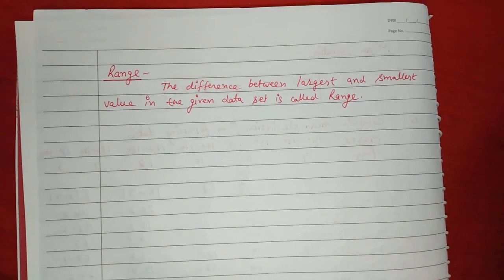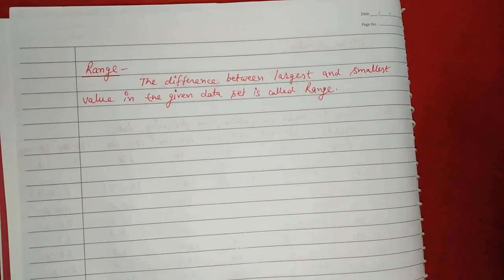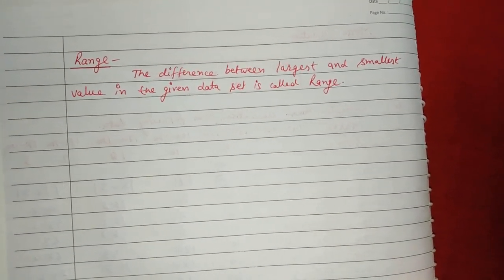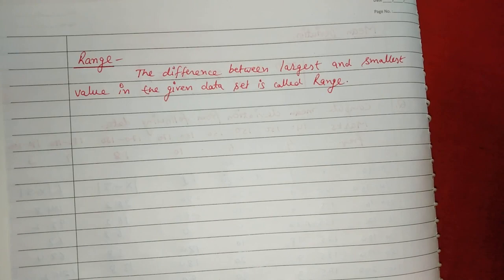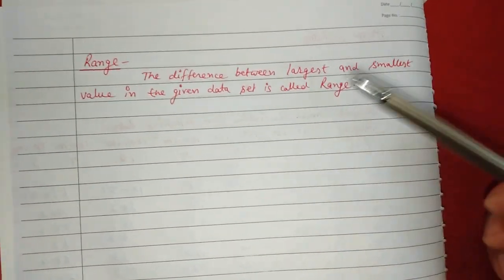Hi friends, you are welcome to the channel. Today we are going to discuss the range, which is a measure of dispersion, and we will discuss it through examples. Today we will talk about another measure which is the range, and when we talk about data dispersion, this is the most easy measure to check data dispersion.